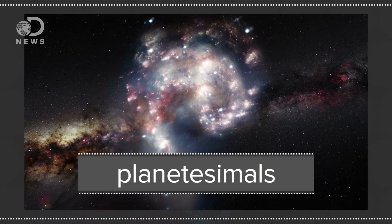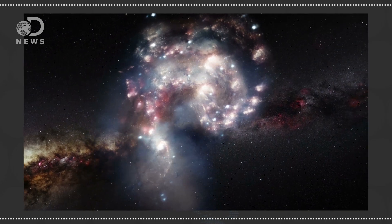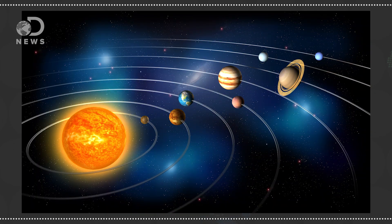When the solar system first formed, there were planetesimals, or small planetary building blocks, flying around in the inner solar system where Mercury, Venus, Earth and Mars are now.